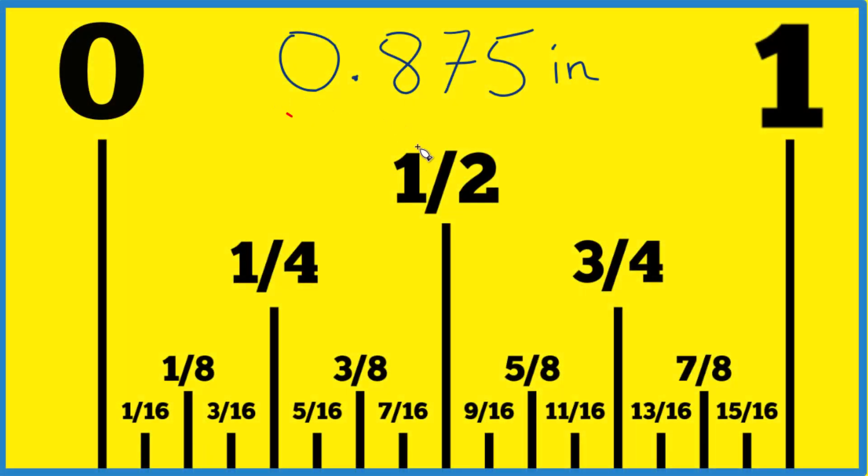So here's how you find 0.875 inches on a ruler. Really what we need to do is convert this to a fraction.